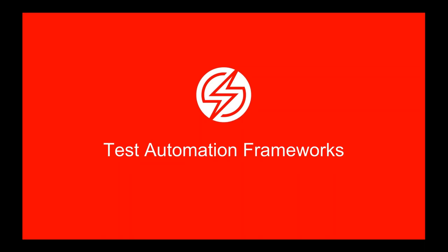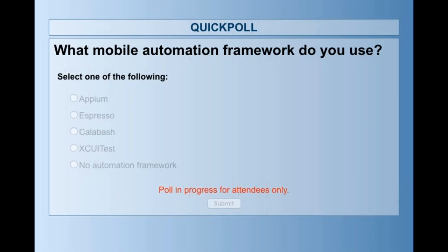Before we dive into test automation frameworks, I'd like to take a quick survey to get an understanding of your usage of automation frameworks. What mobile automation frameworks do you use? You can select one of the following: Appium, Espresso, Calabash, XCUITest, or if you're not using a framework. We'll give you about 30 seconds to a minute to fill that out. Even if you're not using an automation framework, you can also select that if you're using a homegrown framework or some new emerging technology.